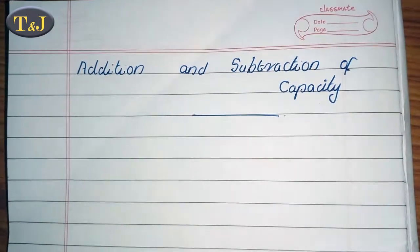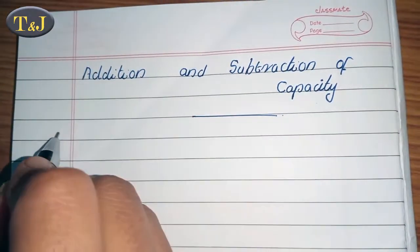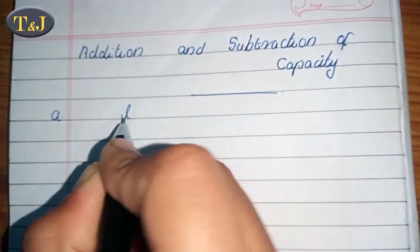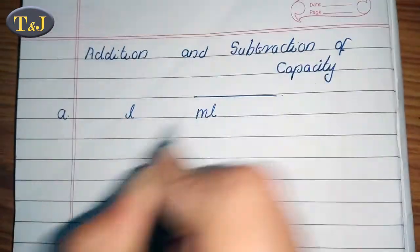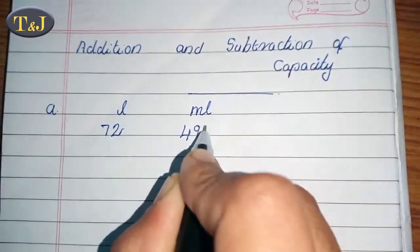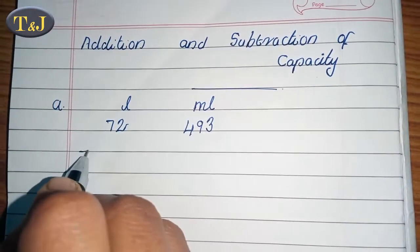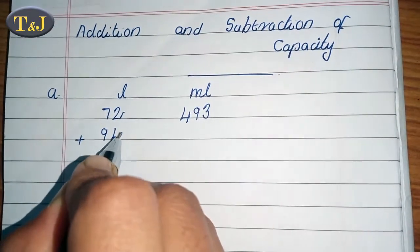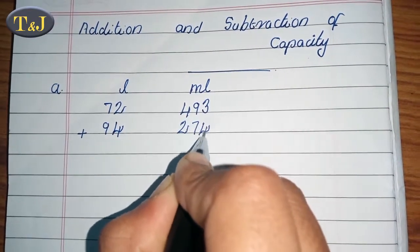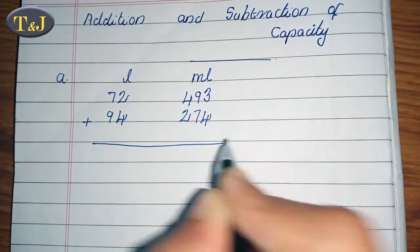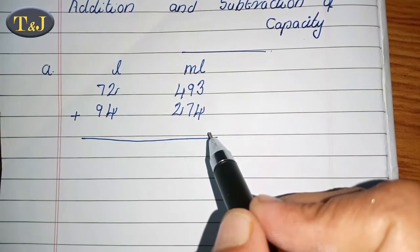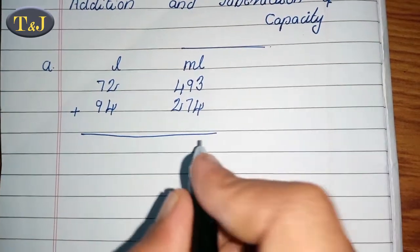Our first heading is addition of capacity. First we write the units: liter and milliliter. Then 72 liter 493 milliliter plus 94 liter 274 milliliter. We are just adding the numbers: 3 plus 4, then 3 plus 4 equals 7.